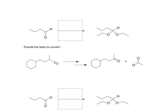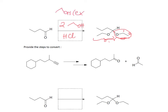Given an aldehyde and an acetal as product, you need to figure out the reagents. Recall from class you need an alcohol — since it's an acetal and not a hemiacetal, you need two equivalents of ethanol, treated in the presence of an acid catalyst such as H+ or HCl. You can also write this as ethanol in excess; both mean the same thing.